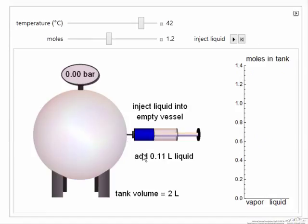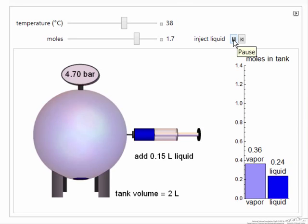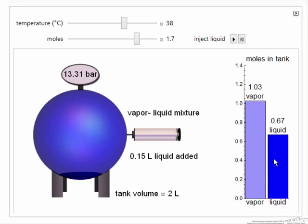In this interactive simulation, we're going to inject the liquid, and we can change the amount of liquid that we're going to inject by moving this slider. We can also change the temperature of the tank. And then when we select play, the system will go to equilibrium. The bar graph tells us how many moles of vapor and how many moles of liquid we have at equilibrium.